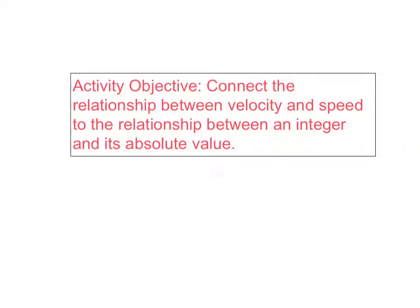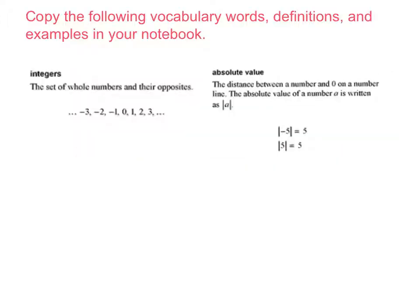Pause again while you write today's activity objective in your math notebook. Today's objective is to connect the relationship between velocity and speed to the relationship between an integer and its absolute value. Now copy the following vocabulary words, definitions, and examples in your notebook.